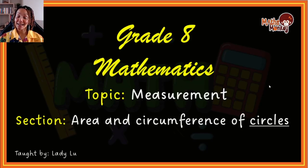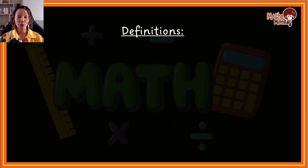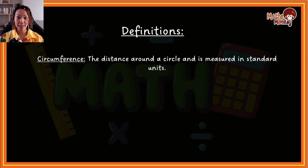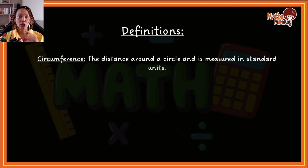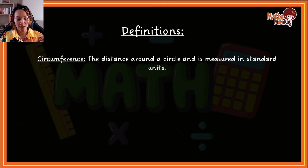This is our lesson on area and circumference of circles and this falls under the topic of measurement. I always like to make sure that you understand the terminology that's going to be used in this video. So let's start with the definition of circumference. The circumference is the distance around a circle and is measured in standard units. You can think of the circumference as the perimeter of a circle — if I were to take a string and keep it right at the edges of the outside of the circle, that would be your circumference.